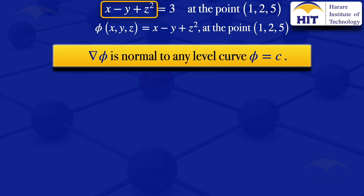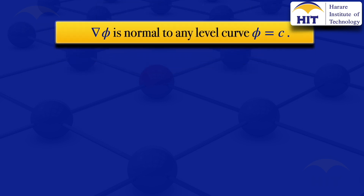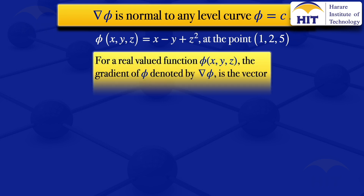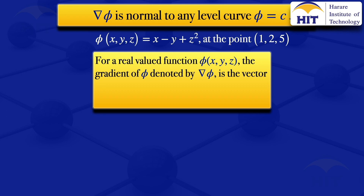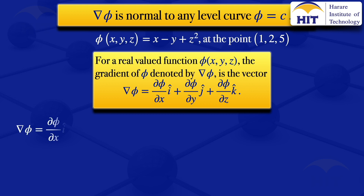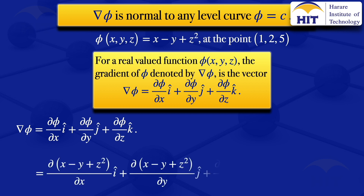So to find the unit normal, we have to find grad phi first, because grad phi is normal to any level curve where phi equals C. For any real-valued function phi, the gradient of phi — denoted grad phi — is the vector of partial derivatives: partial derivative of phi with respect to x times i, plus partial derivative with respect to y times j, plus partial derivative with respect to z times k. Substituting phi = x minus y plus z squared, we write out those partial derivatives.